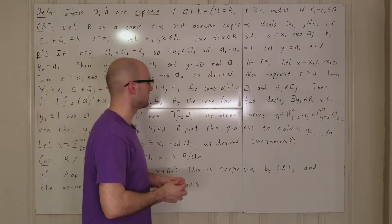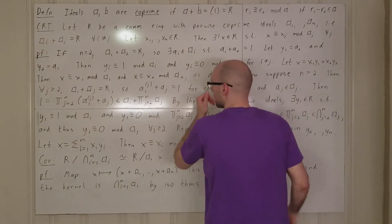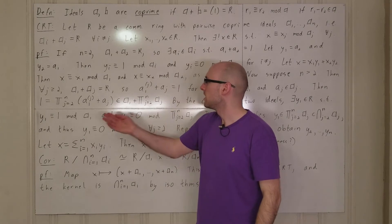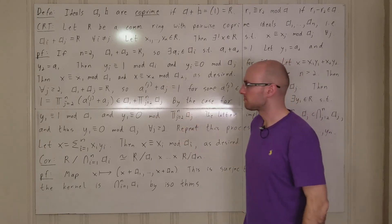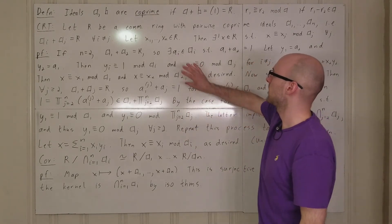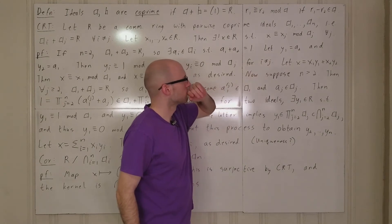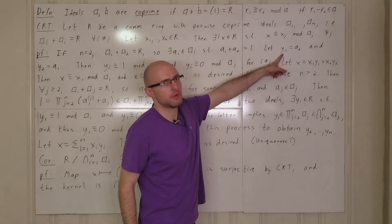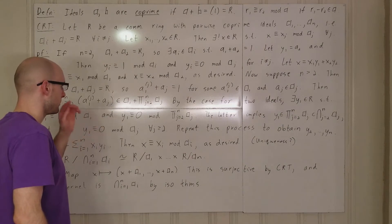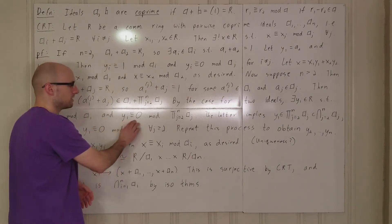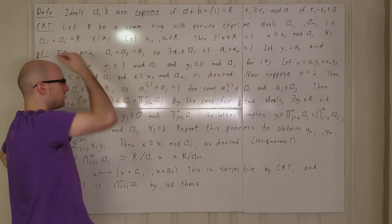Applying the n equals 2 case tells us there is an element y1 in r such that y1 is congruent to 1 mod a1 and y1 is congruent to 0 mod the product a2 through an. y1 congruent to 0 mod this product means y1 is contained in this product ideal.